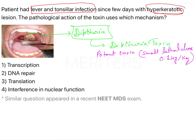The diphtheria toxin has a virulence factor responsible for both local effects and systemic complications. This virulence factor is coded by a gene known as the tox gene — very important for exam purposes — and this tox gene is beta phage encoded.